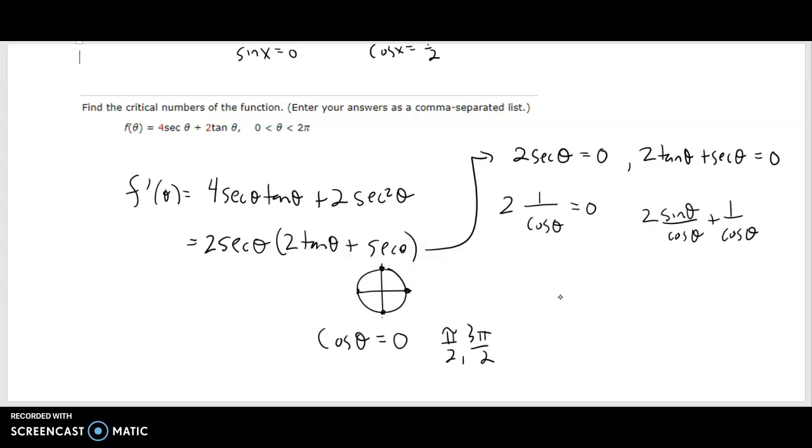And then over here, this one can be equal to 0. We can add these together. 2 sine theta plus 1 over cosine theta equals 0. We've already taken care of that guy. And now you just have to solve the equation 2 sine theta plus 1 equals 0, or sine theta equals negative 1 half, which would give you the values in quadrant 3, 7 pi over 6, and in quadrant 4, 11 pi over 6.